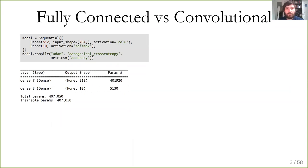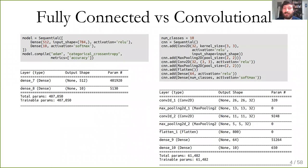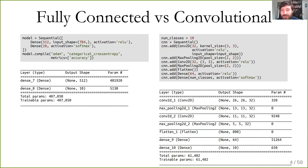I'm comparing a fully connected and a convolutional neural network on these two datasets. On the left is a fully connected network with one hidden layer of 512 units, rectified linear activation, and 10 output nodes for the 10 classes. On the right is a relatively small convolutional neural network with 3x3 filters in the first layer with 32 feature maps, then a 2x2 max pooling, then another 3x3 convolutional layer, another max pooling layer, a flattening layer, and then a densely connected layer with 64 units.